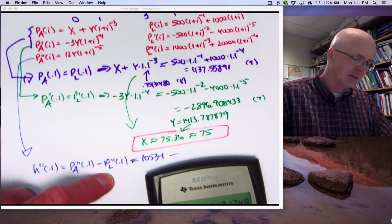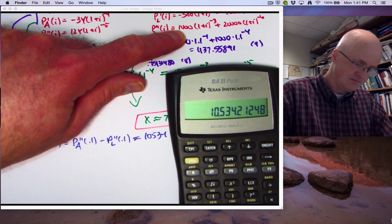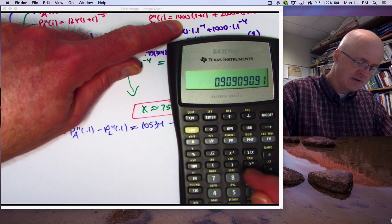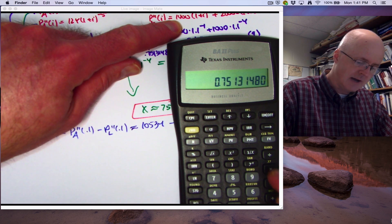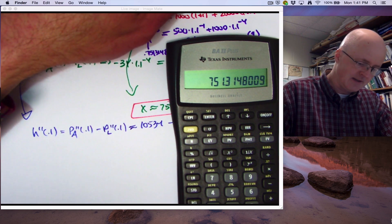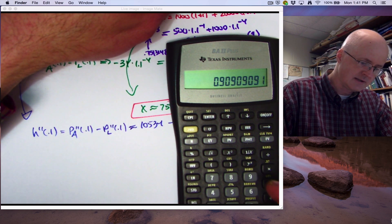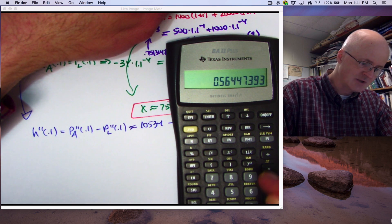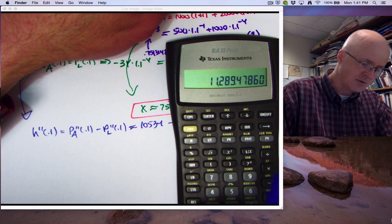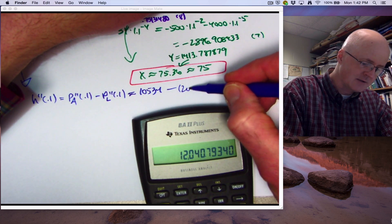And then Pl double prime of 0.1, plug in 0.1 right there. So I got v to the third power, times 1000, store that in register one. And this is going to make the major contribution here, v to the sixth power, times 20,000. Add that to what's in register one. I'm subtracting approximately 12,041 here.